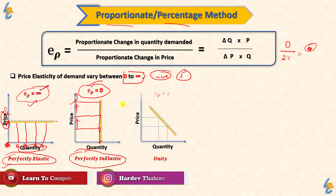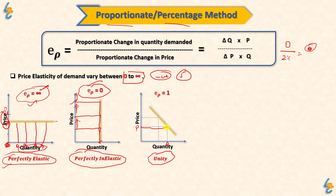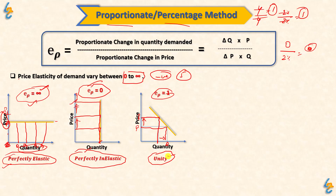The third case is Unitary Elastic. Unitary Elastic means that if the price changes by a certain percentage, the quantity changes by the same percentage. For example, if price changes by 2% and quantity also changes by 2%, the price elasticity value is 1. Similarly, if price changes by 4% and quantity also changes by 4%, price elasticity is still 1. This is the Unitary Elastic case, where the price elasticity value equals 1.